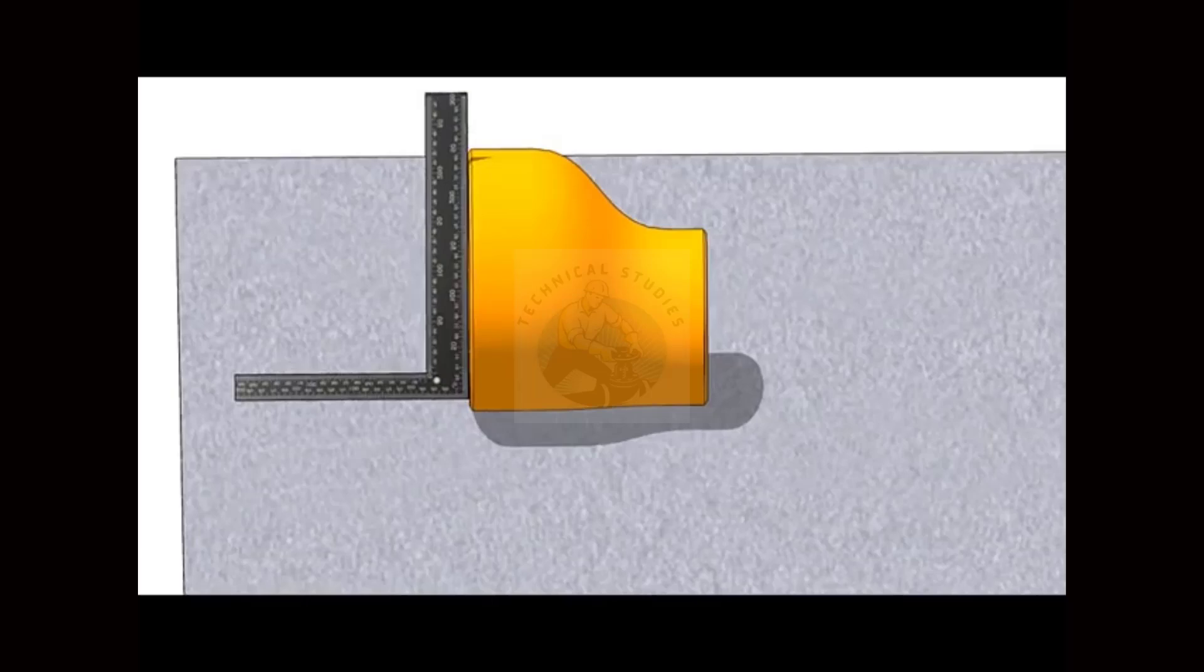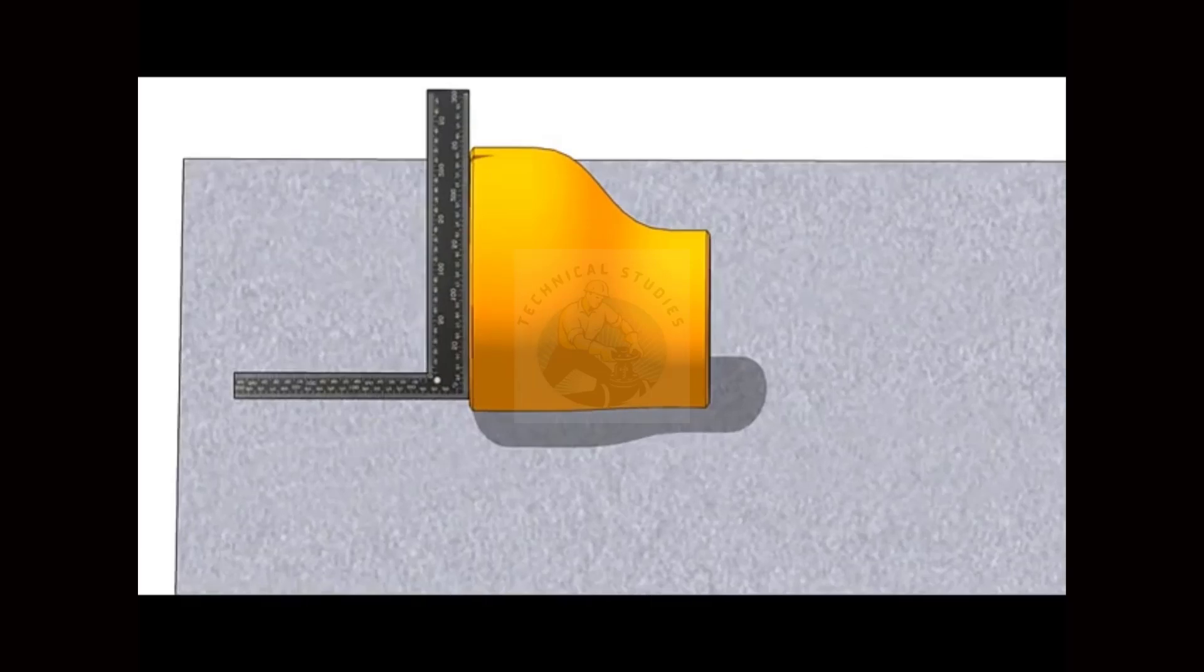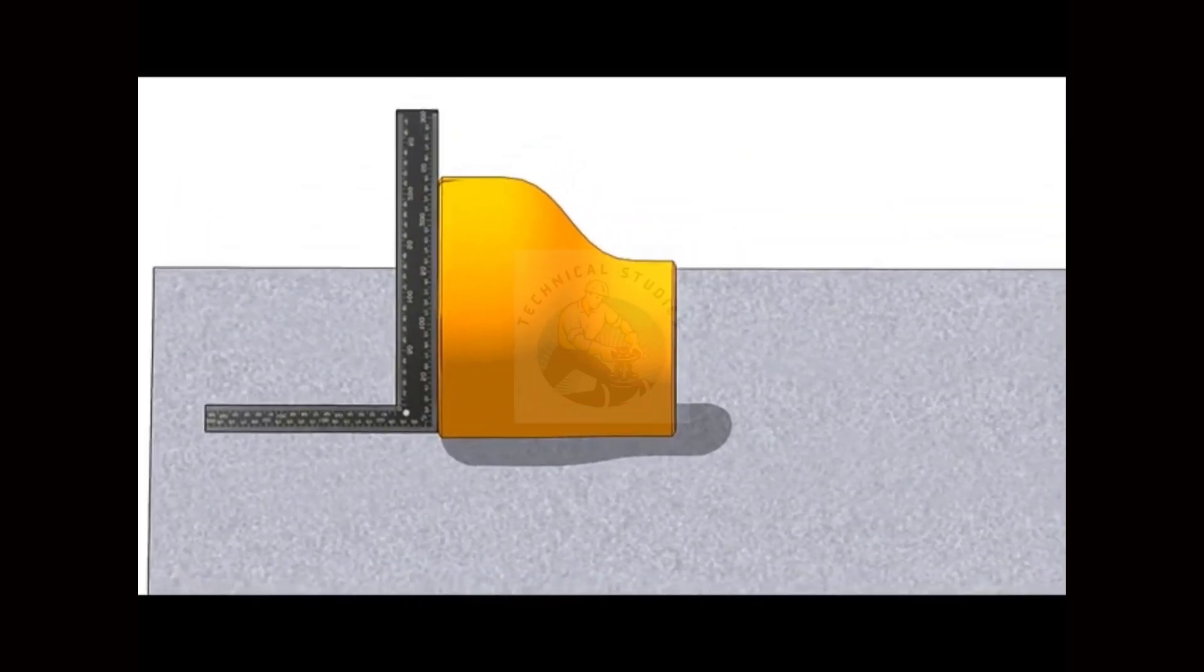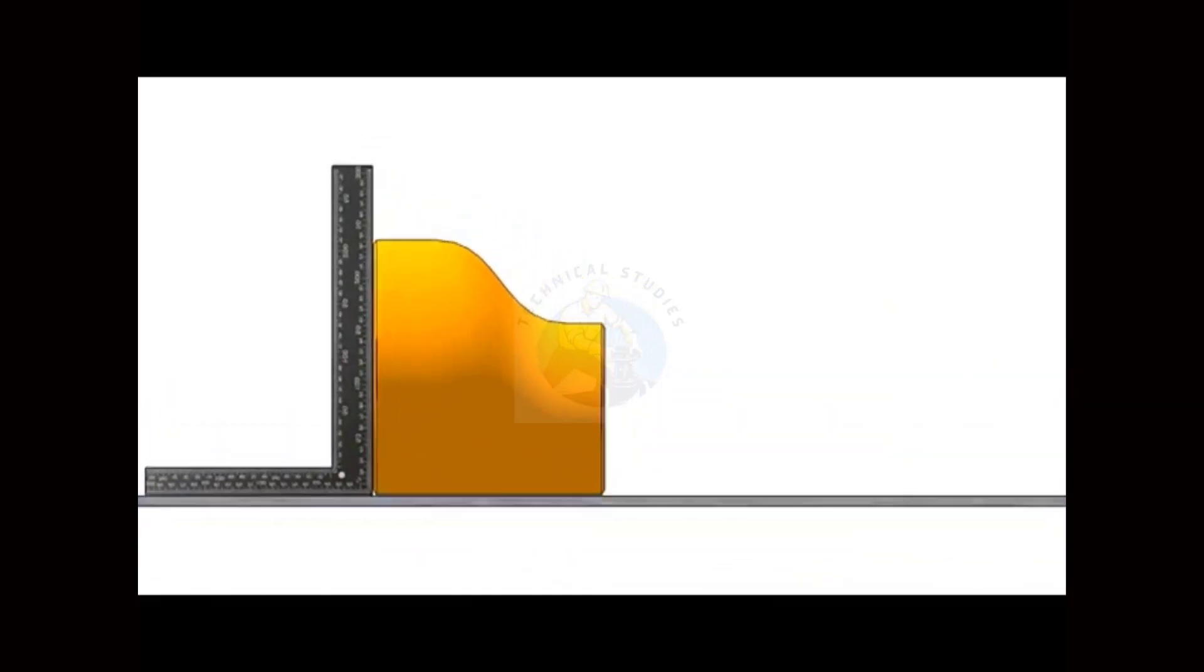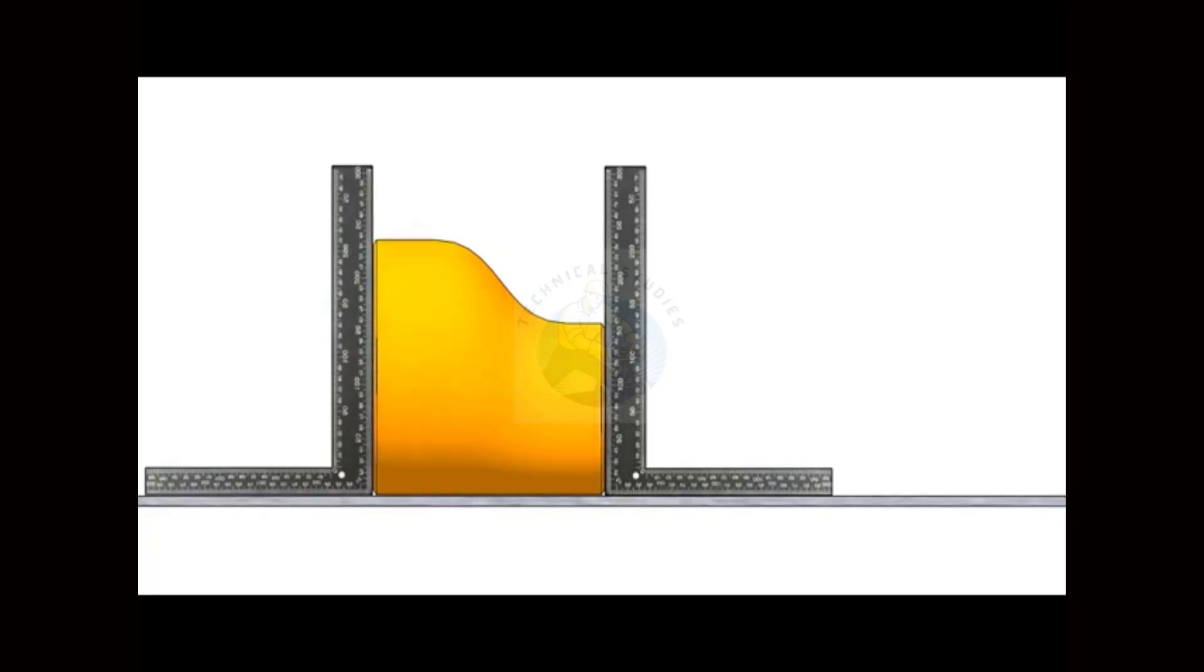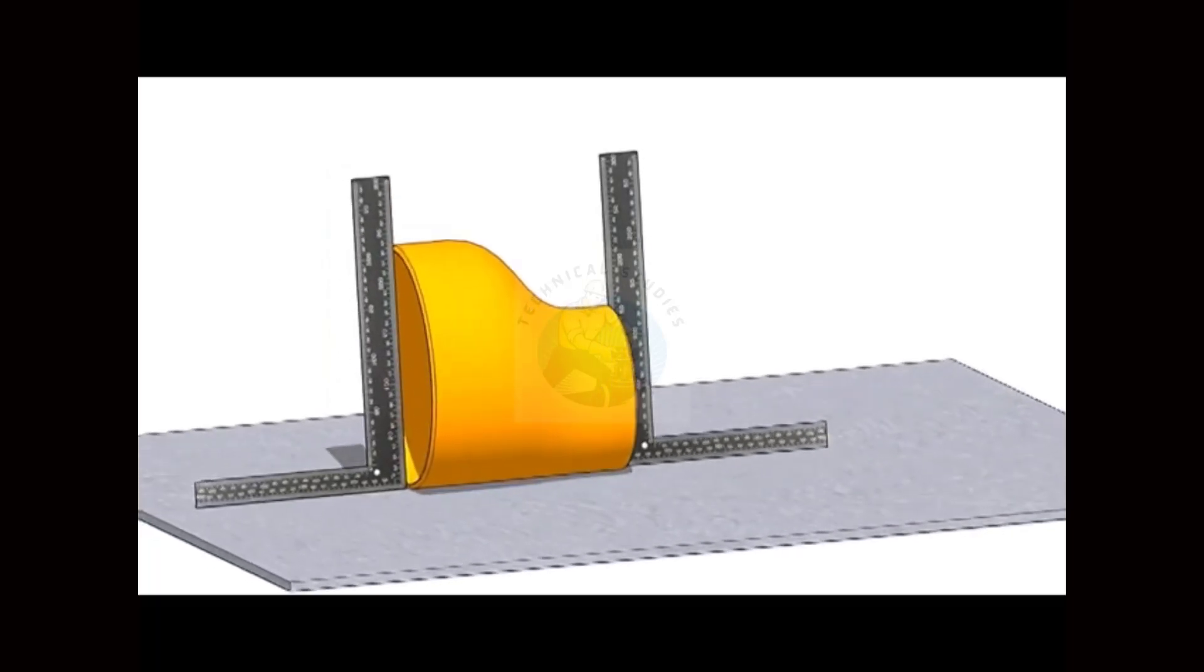Hold a right angle on the large side of the reducer as shown. Roll the reducer back and forth until the face of the reducer touches the right angle properly. Now check the other end with another right angle. If the right angle touches the face properly, the reducer is almost okay.